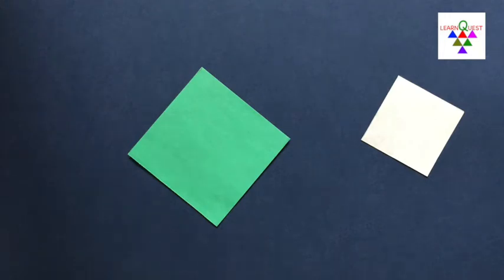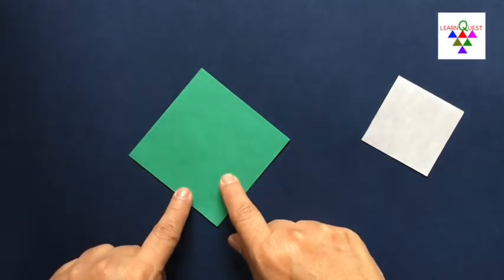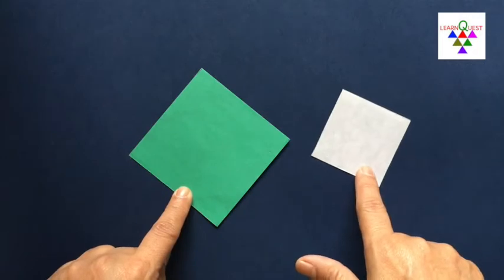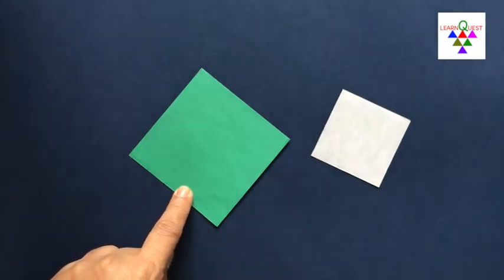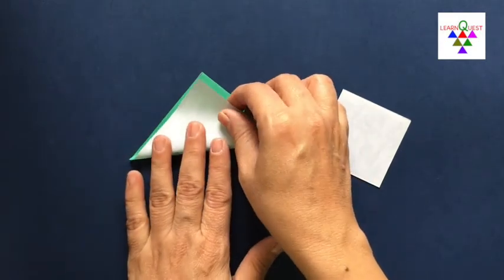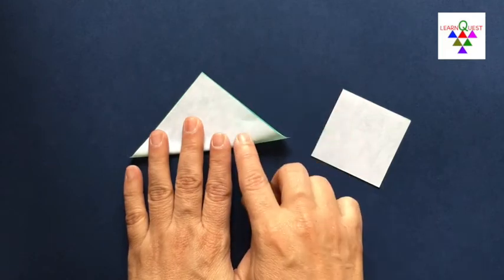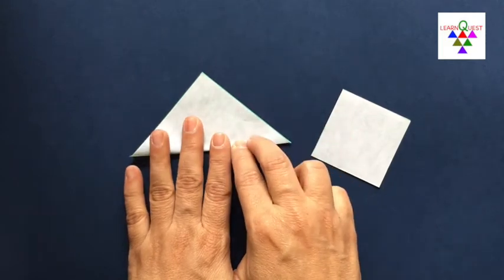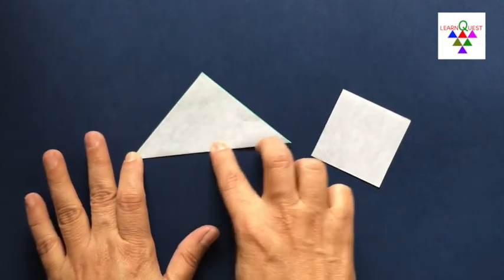In this video we are going to fold a bird, and as we fold the bird we are going to discover many different geometric terms that we learn in school. Let's begin. This is the paper that I'll use for the bird, and this small square is just something that I'll use as a reference. So I start by folding this square in half, I fold it along the diagonal, and I get a triangle.